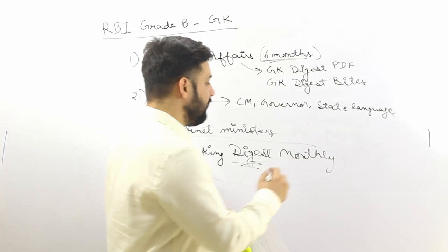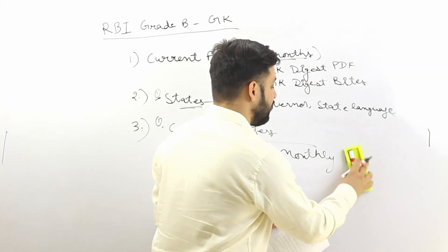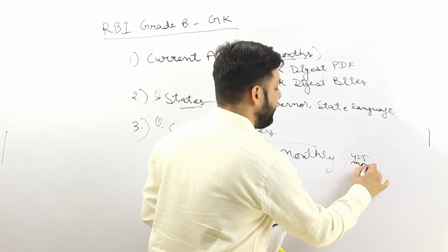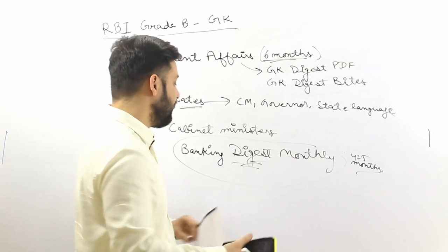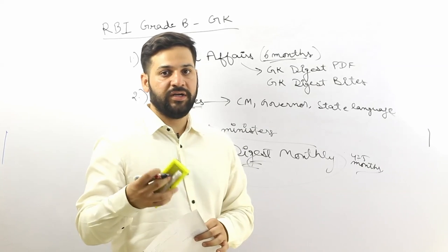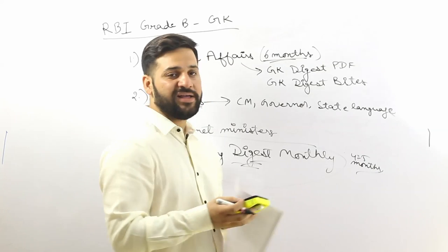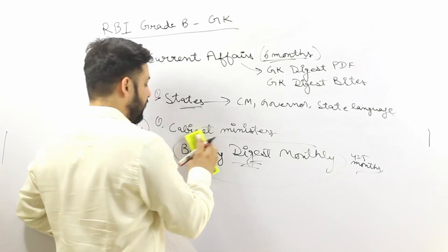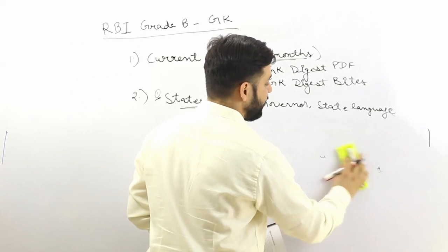You need to go through the previous three, four, or five months of the Banking Digest PDF. Most probably, at least 10 to 15 days before the exam I will release a combined Banking Digest for the RBI Grade B Phase 1 exam. For current affairs, I release the I-Digest every month, so that one is also important.